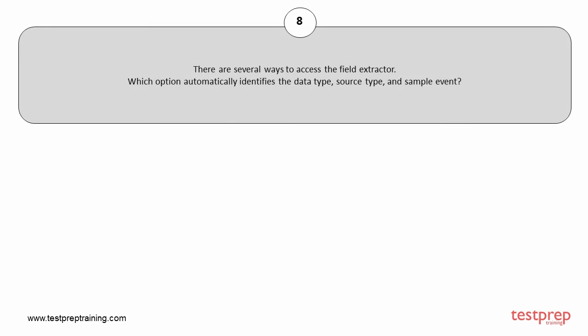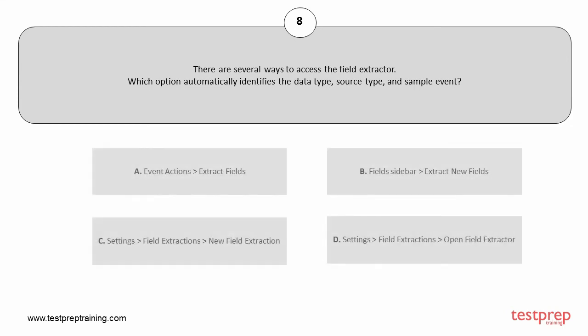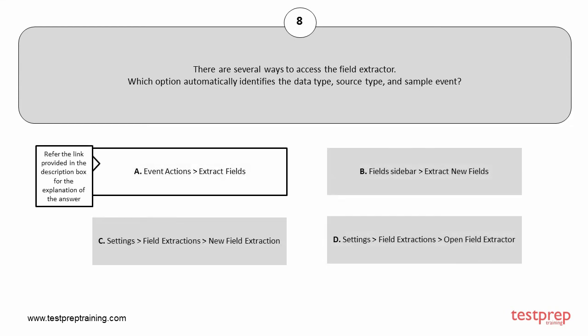Question number 8. There are several ways to access the field extractor. Which option automatically identifies the data type, source type, and sample event? The correct answer is option A.